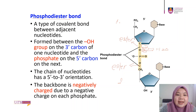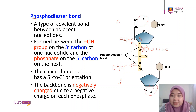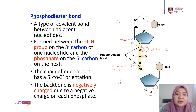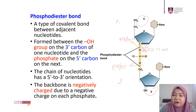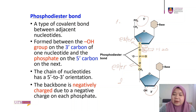The chain of nucleotides has a 5' to 3' orientation, as shown in the previous slide. The backbone is negatively charged because of the negative charge on the phosphate group. Because the backbone consists of repetition of sugar-phosphate, and phosphate is negatively charged, that makes our DNA negatively charged as well.